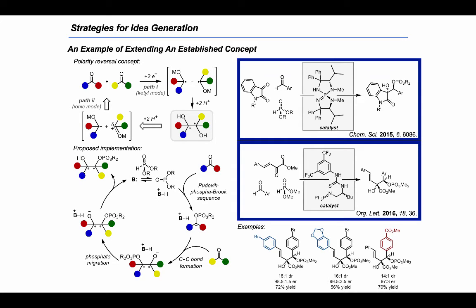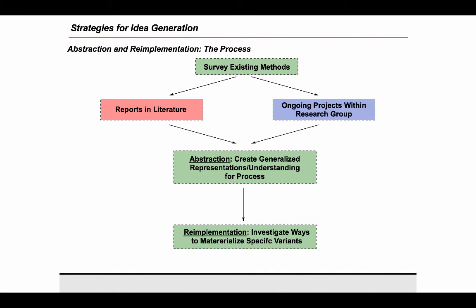Hopefully seeing these developments makes it clearer how it's possible to incrementally introduce new variables to a system and continue to generate new ideas that advance the frontier. Now I want to talk about another related strategy for idea generation, which I would call abstraction and re-implementation. This starts the same way — by surveying existing methods for a process of interest — but then the researcher tries to abstract a generalized understanding, potentially using generalized representations of the reaction components, and then recognizes new contexts where those ideas can be applied in new ways.